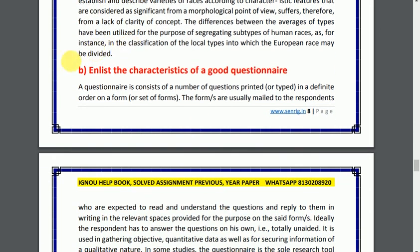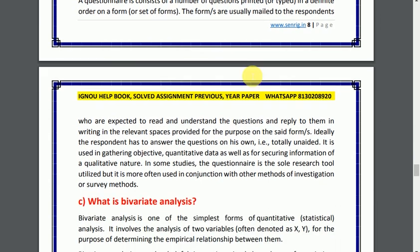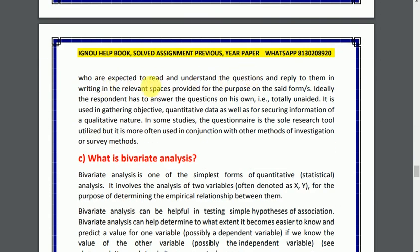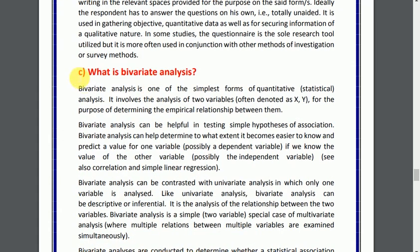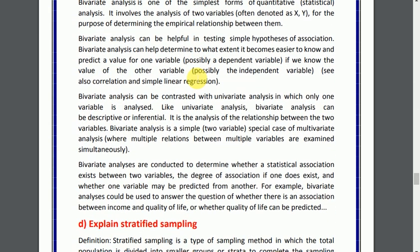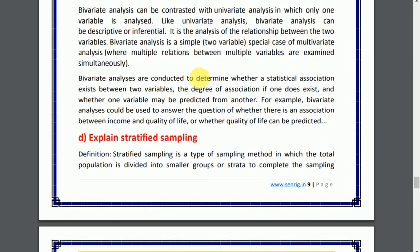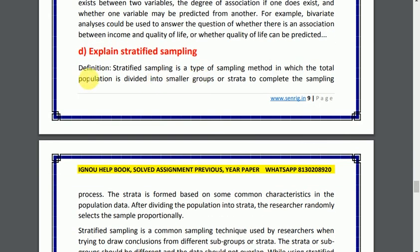Part B: analyze the characteristics of good questionnaires. You can see the answer — the word limit is 150 words. Part C, question number 4: what is behavioral analysis? You can see the answer. Part D: explain stratified sampling. The answer is provided here.